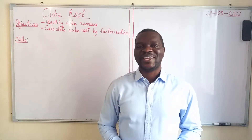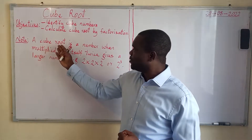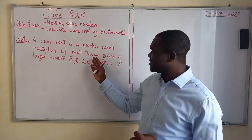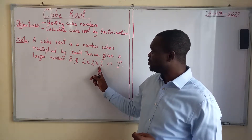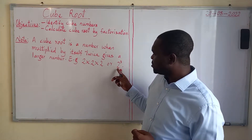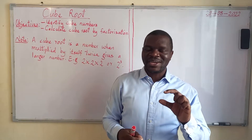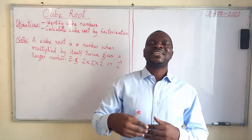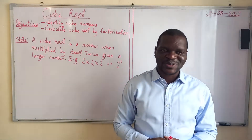Stay tuned and don't go away. A cube root is a number which, when multiplied by itself twice, gives a larger number. For example, 2 times 2 times 2, or 2 to the power 3, also read as 2 cube. So a cube root is simply a smaller number multiplied by itself two times to give a bigger number. And what is this bigger number? That is what we want to look at as well.